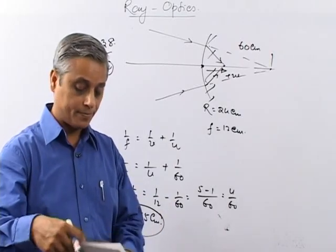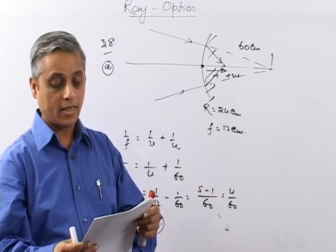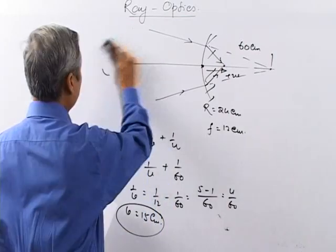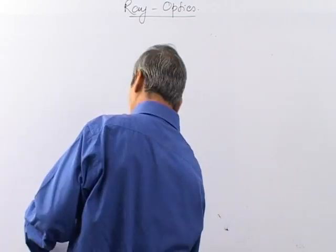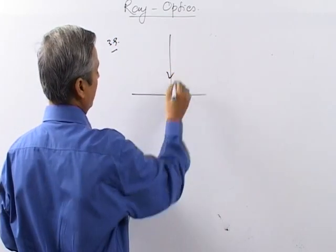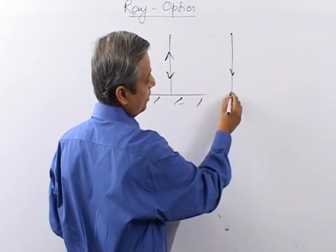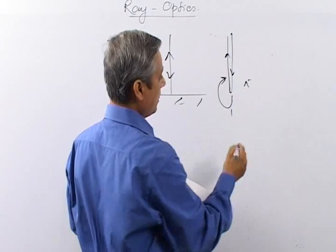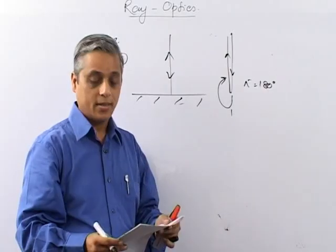Question number 39: A light ray incident normally on a plane mirror suffers a deviation of — if a ray hits a plane mirror normally, it reflects straight back. The ray coming in one direction goes back in the opposite direction, so the deviation is π, i.e., 180°. The answer is C.